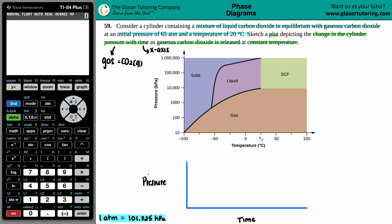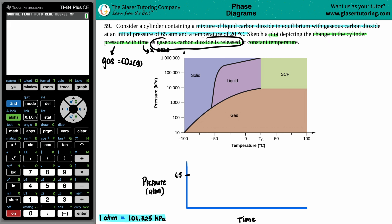It says that we're starting off with an initial pressure of 65 atm. So here's 65 atm on the y-axis. Over time, we want to sketch a plot depicting the change in the cylinder pressure as gaseous carbon dioxide is released. So basically, the cylinder is open — they're going to start releasing gaseous carbon dioxide.